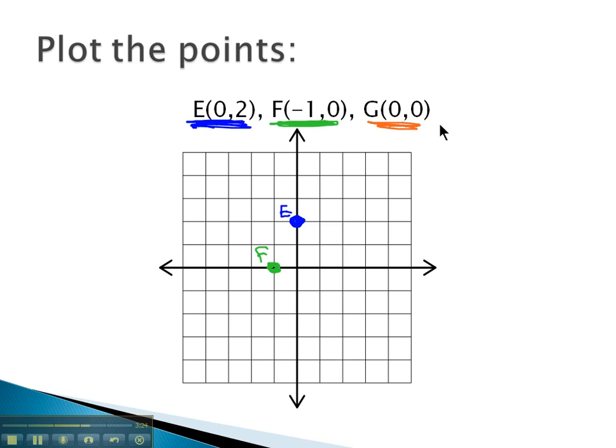G is at the point 0 comma 0. 0 means we move right 0, up 0. We stay at our original point with no motion. We get point G is right on the origin.